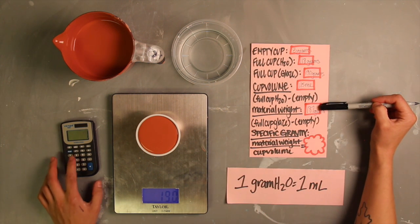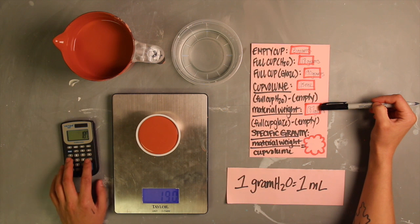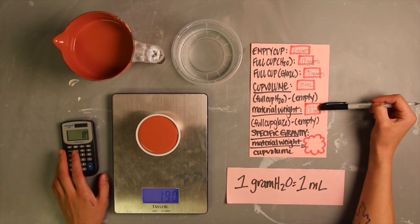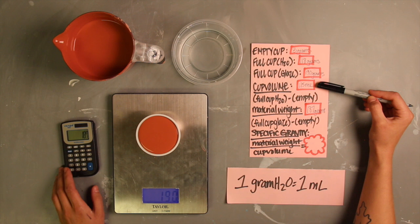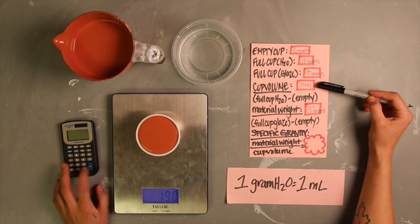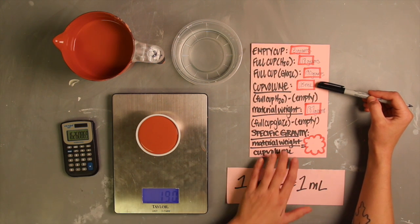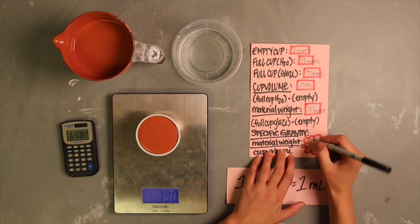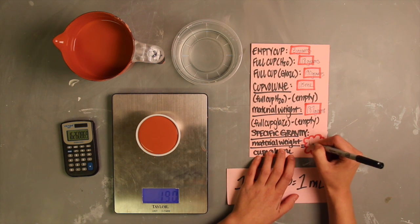Now you're ready to calculate your specific gravity. You will need to divide the material weight, 187, by the volume you measured. Mine was 115 milliliters. Rounding to two decimals, I've arrived at a specific gravity of 1.63 grams per milliliter.